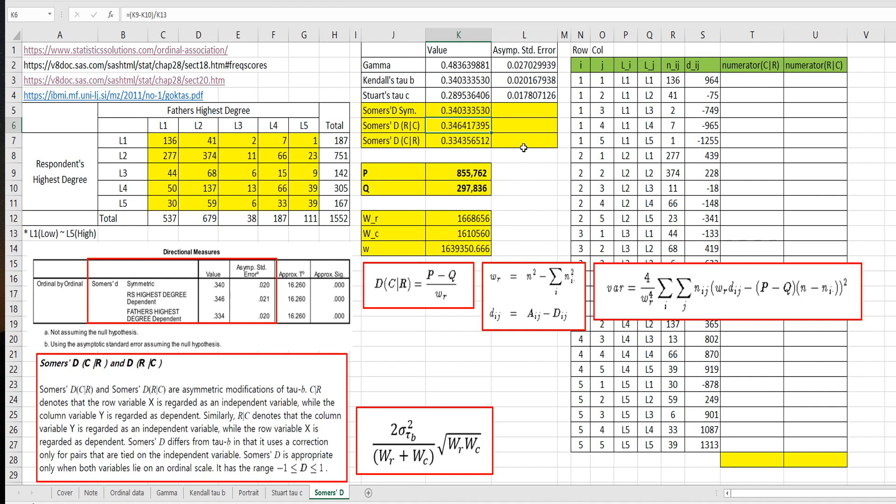In order to calculate asymptotic standard error, we need to understand this formula. There is WR for column given R. And when we calculate row given column, we need to use WC instead of WR.